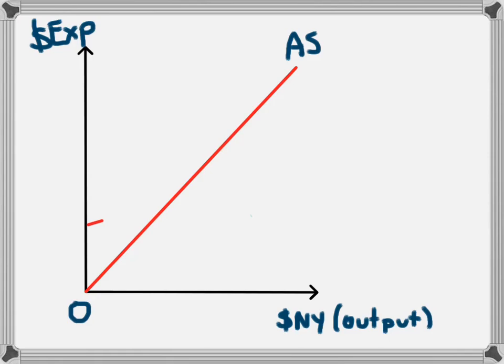The second thing to note is that not every extra dollar of income is spent. Households save some of their money. So we do not get a 45-degree line with every dollar of income leading to a dollar of expenditure. Instead, we get a flatter line like this.